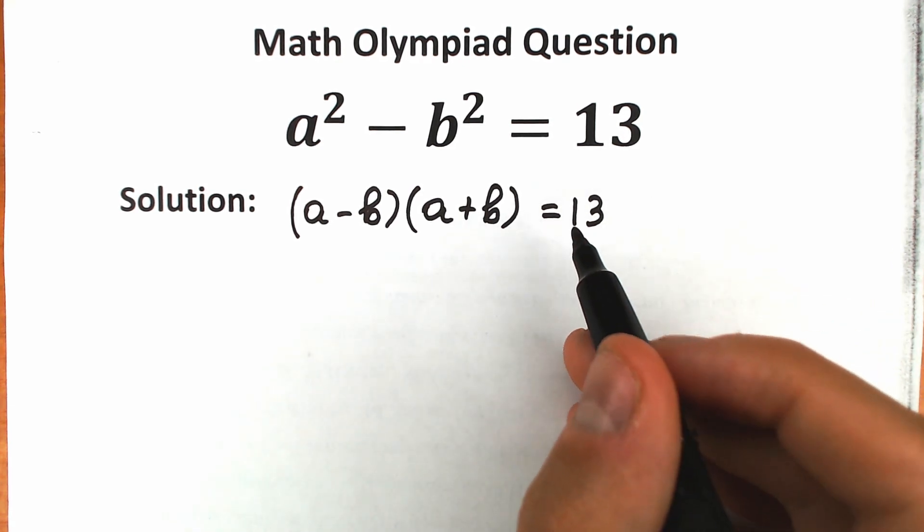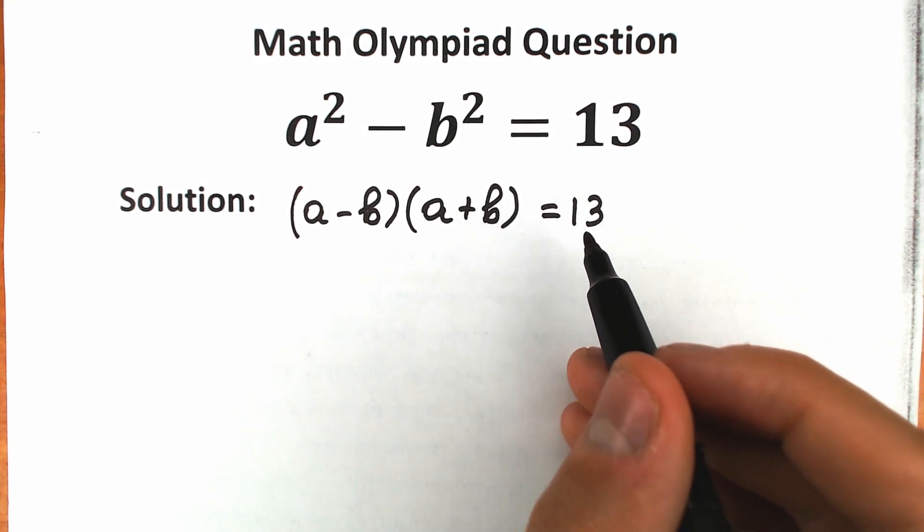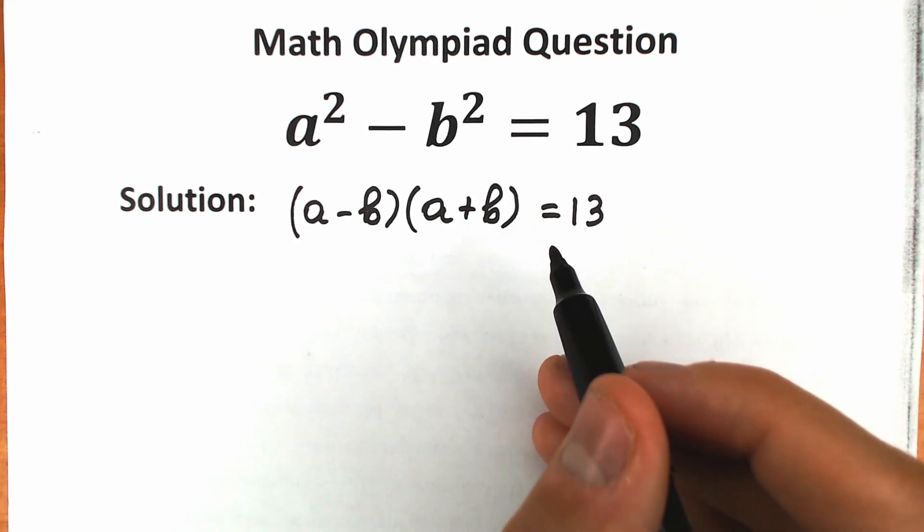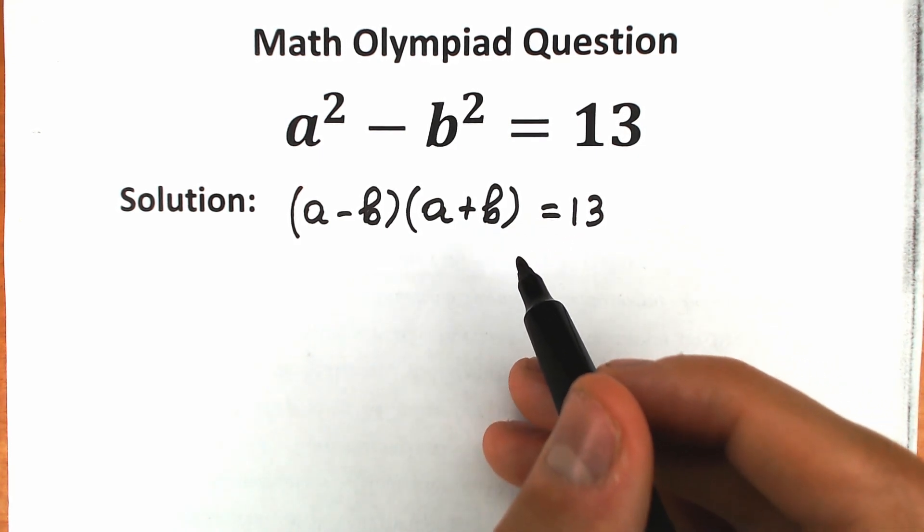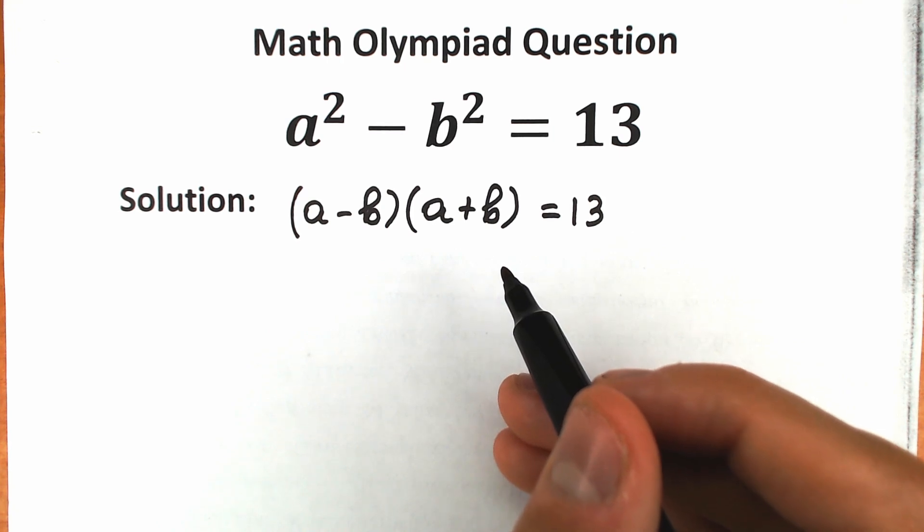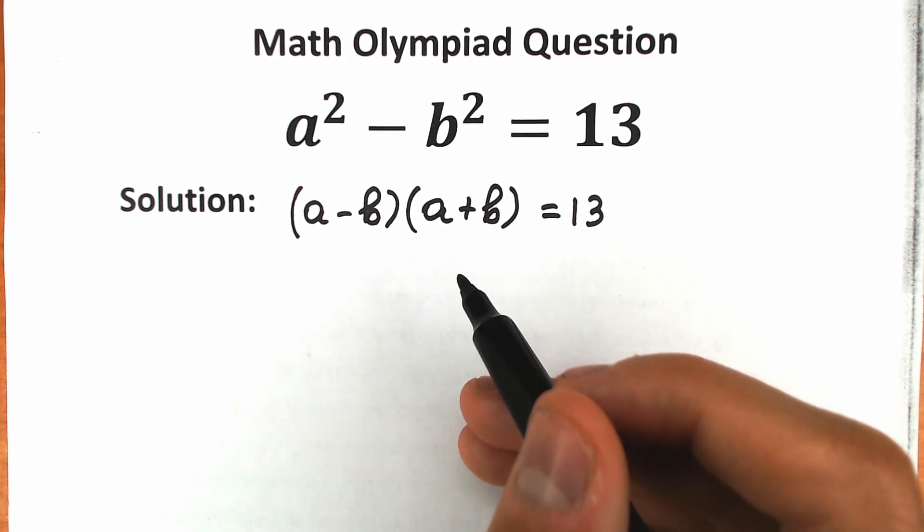And right now, let's look at our right hand side. On the right hand side, we have a really interesting number, 13, and everyone should know about prime numbers. So what is a prime number? A prime number is a number that can only be divided by itself and one without remainders.